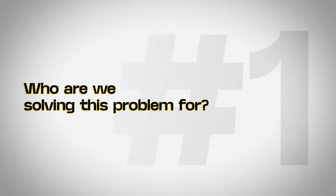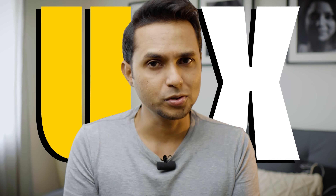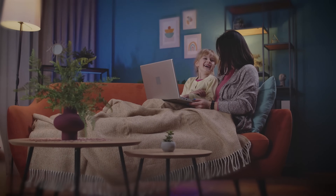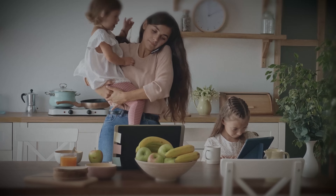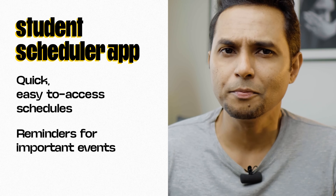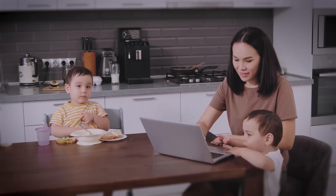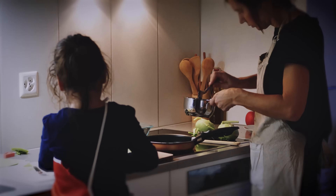Question number one: who are we solving this problem for? The U in UX is user, and this question is about knowing your users. Imagine you're designing an app for parents to manage school schedules and activities for their kids. Your users may be tech-savvy millennials, but that's not where it ends. They are busy parents who may not have a lot of time to spend on their phone. You need to think about what is important for them — quick, easy-to-access schedules, reminders for important events, and minimal interactions. A simple, clean interface with big buttons for easy navigation would probably work better than a complex, feature-heavy design. Knowing that parents often juggle work, school runs, and household chores means designing an experience that helps them quickly find what they need rather than overwhelming them with unnecessary features.